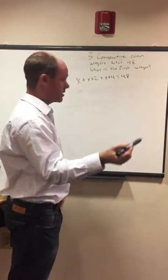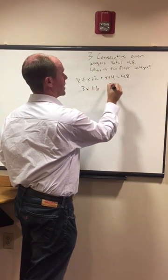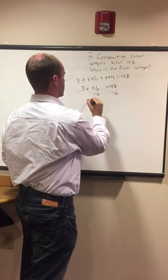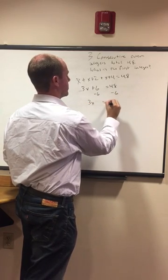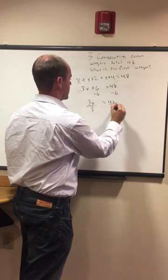As we add these together, we have 3x plus 6 equals 48. Subtract 6 from both sides: 3x equals 42. Divide by 3 on each side: x equals 14.